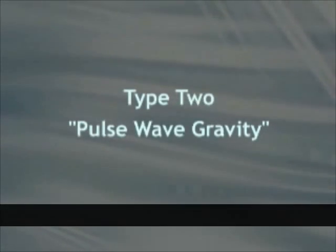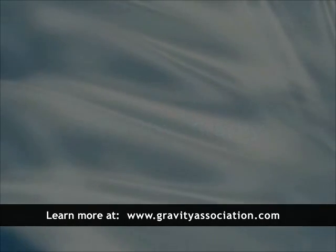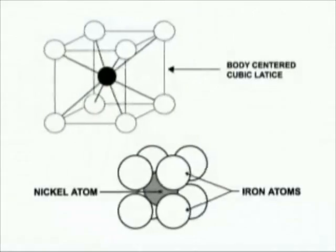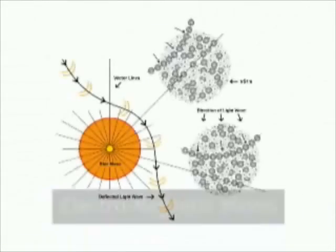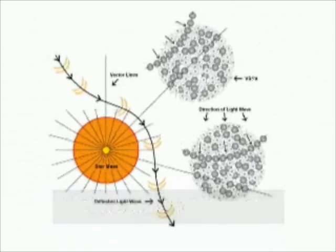Type 2 displacement gravity is pulse wave gravity. This type of gravity is generated by quans at the center of quarks and oscillating atoms in magnets. Electromagnetic waves, or light waves, are generated by any motion in the Vs1s of the cosmic matrix.